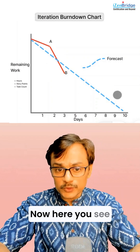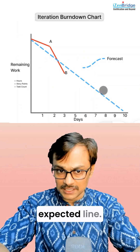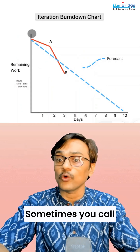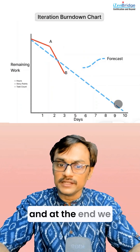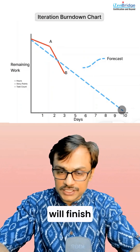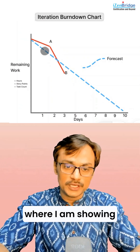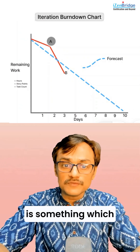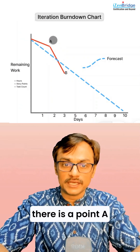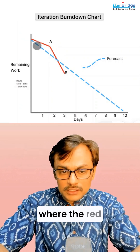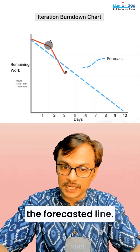Here you see a blue line, which is the forecasted or expected line — sometimes called the predicted line. We assume this is how progress will go, and at the end we will finish the iteration. The red line is the actual line. There is a point A where the red or actual line is above the forecasted line.